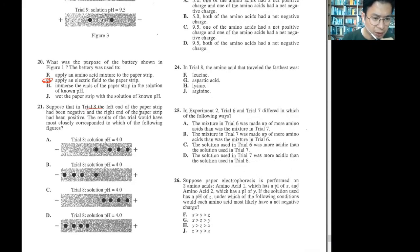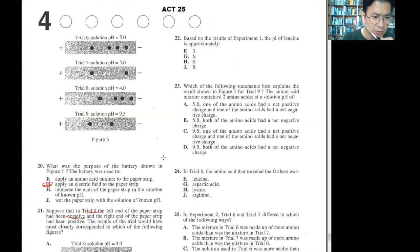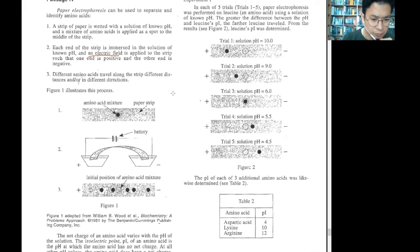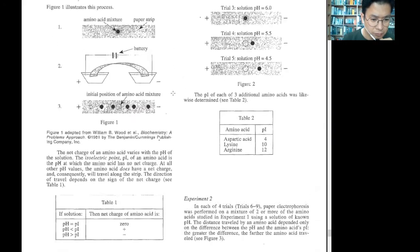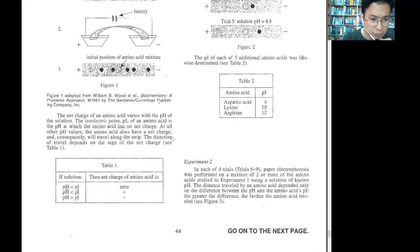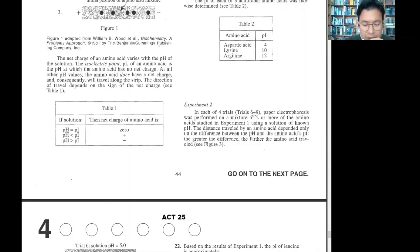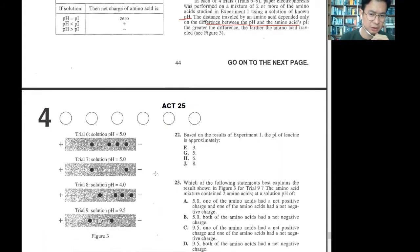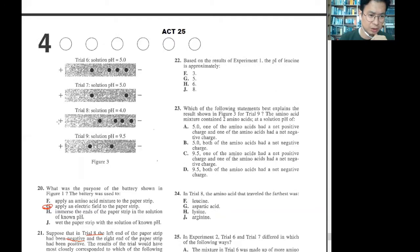Trial 8. The left and the paper strip has been negative. Right is positive. Results of this one, close this one, trial 8.